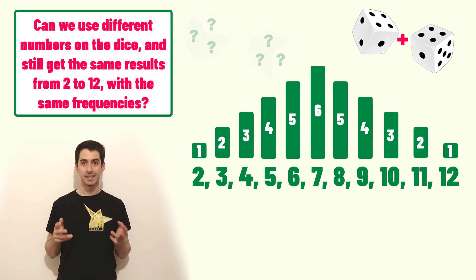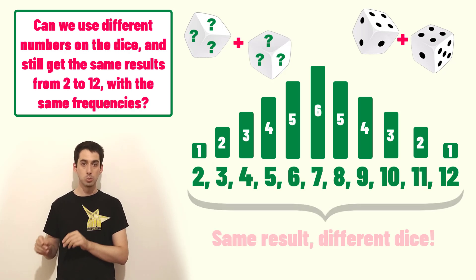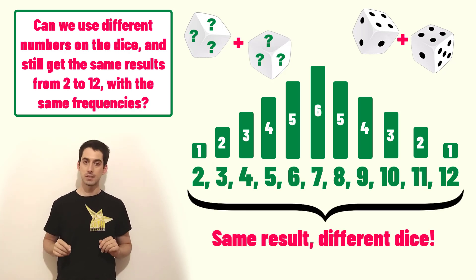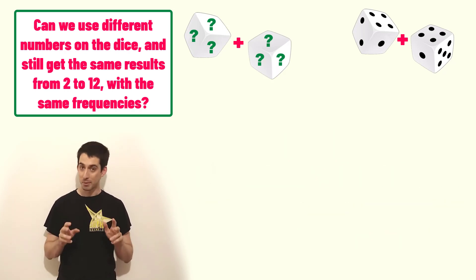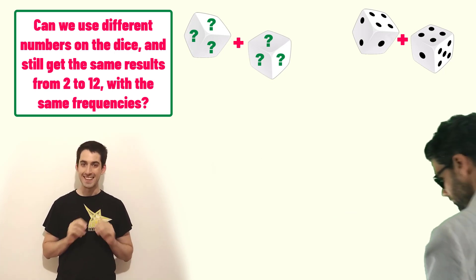Can we find two other dice such that when you roll them and when you add them together you still get the numbers from 2 to 12 with exactly these frequencies? A positive answer to this problem would be incredible.